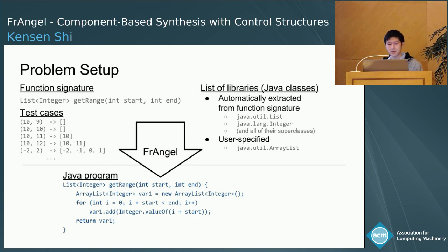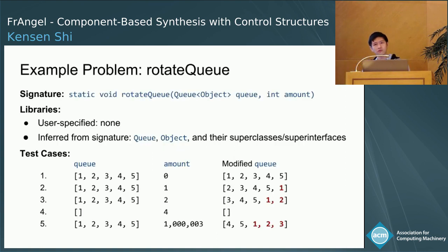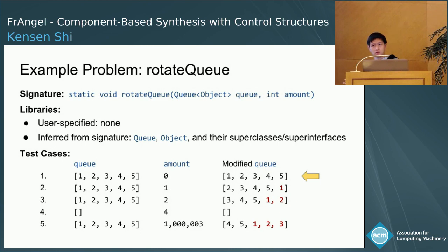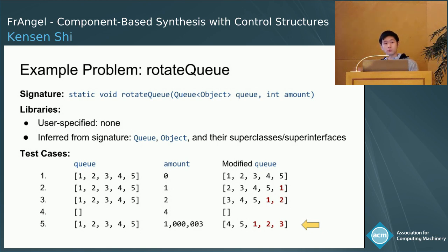Let's go through a concrete example. Let's say we want to synthesize a function called rotateQ. This takes a queue and the amount to rotate by, and it modifies the input queue. All of the necessary classes can be inferred from the function signature. The user provides test cases: if amount is zero, we don't modify the queue; if amount is one, we take the first element and move it to the end; if amount is two, we take the first two elements and move them. We also have an edge case where the queue is empty and a stress test where it suffices to only move the first three elements. Frangel discards programs that loop too long on the examples, ensuring a reasonably efficient solution.